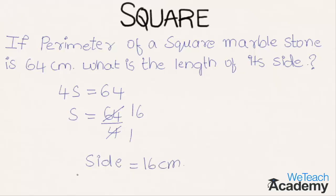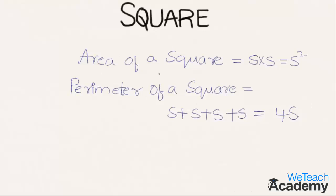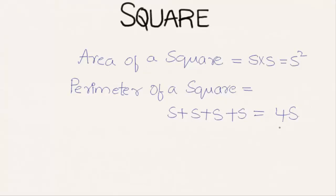To conclude: the area of a square is given by s × s = s², and the perimeter of a square is given by 4s. This was the basic introduction to area and perimeter of a square. Hope you understood the concept. Do like and subscribe to vteachacademy.com. Thanks for watching, have a nice day.